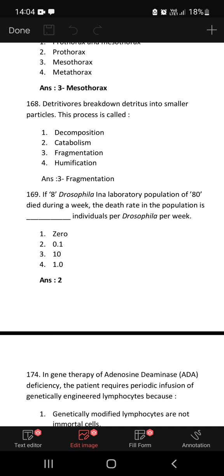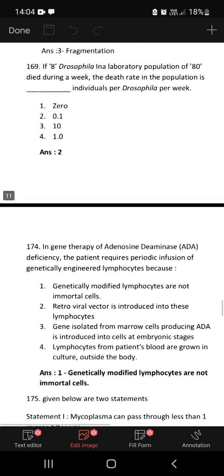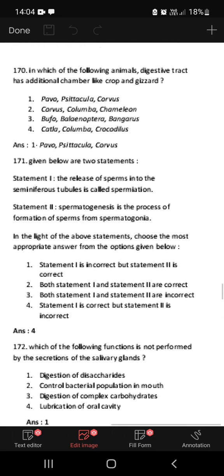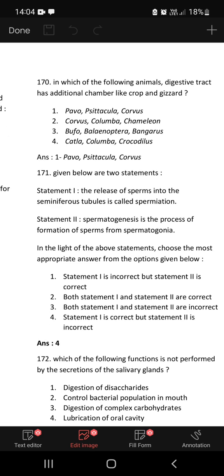Tegmina in cockroach arises from mesothorax. Detritivores breakdown detritus into smaller particles. This process is called decomposition, catabolism, fragmentation, humification. Breakdown of detritus into smaller particles occurs during fragmentation, so third one is the correct answer. If eight Drosophila in a laboratory population of 80 died during a week, the death rate in the population is 0.1 individual per Drosophila per week. You have to divide 8 by 80, so it comes to 0.1 per individual.